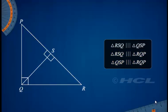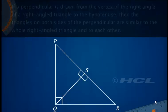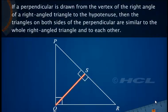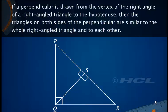This result can be generalized as a statement: if a perpendicular is drawn from the vertex of the right-angle of a right-angled triangle to the hypotenuse, then the triangles on both sides of the perpendicular are similar to the whole right-angled triangle and to each other. This statement is in fact a very important theorem of right-angled triangles.